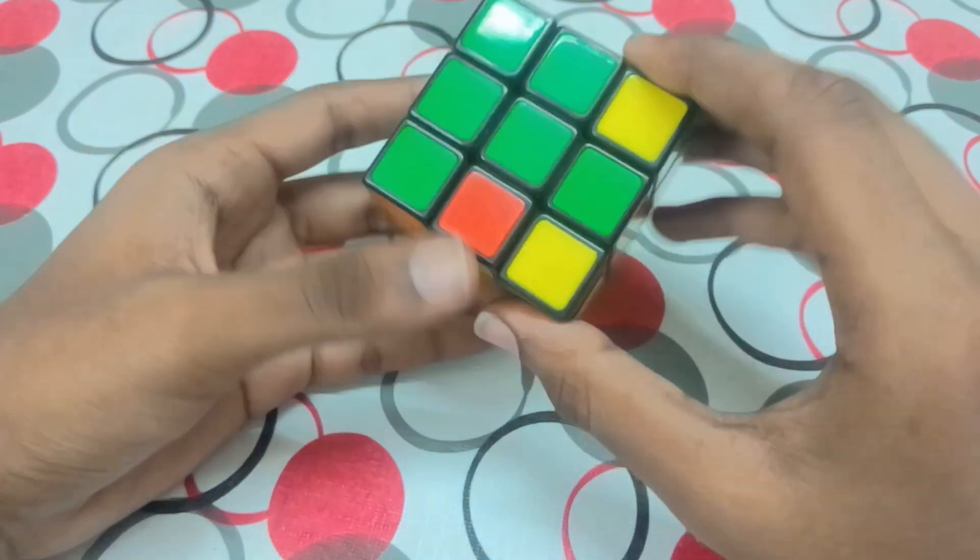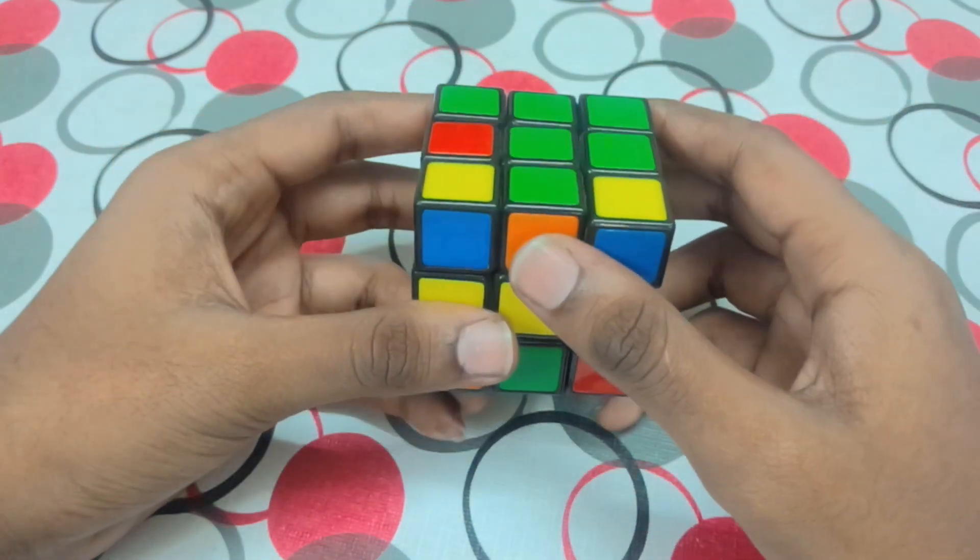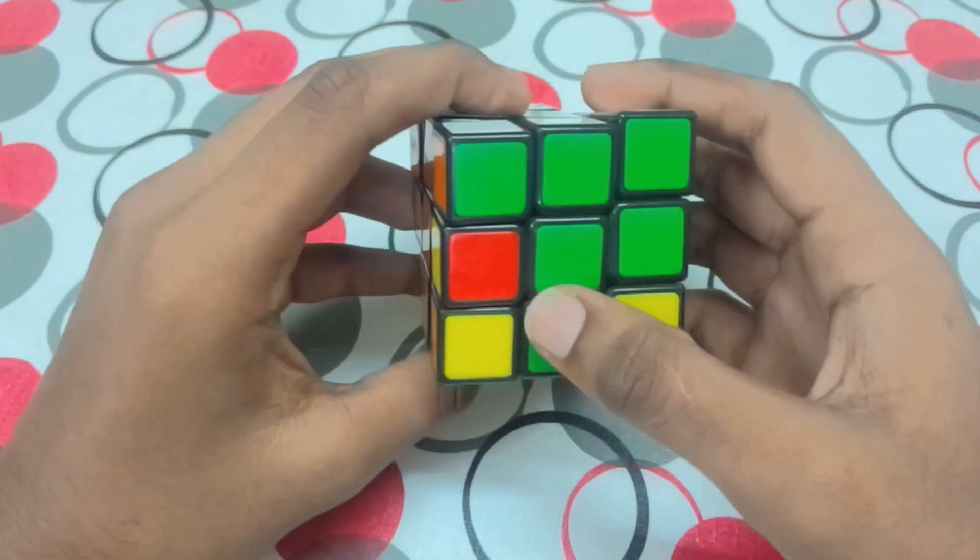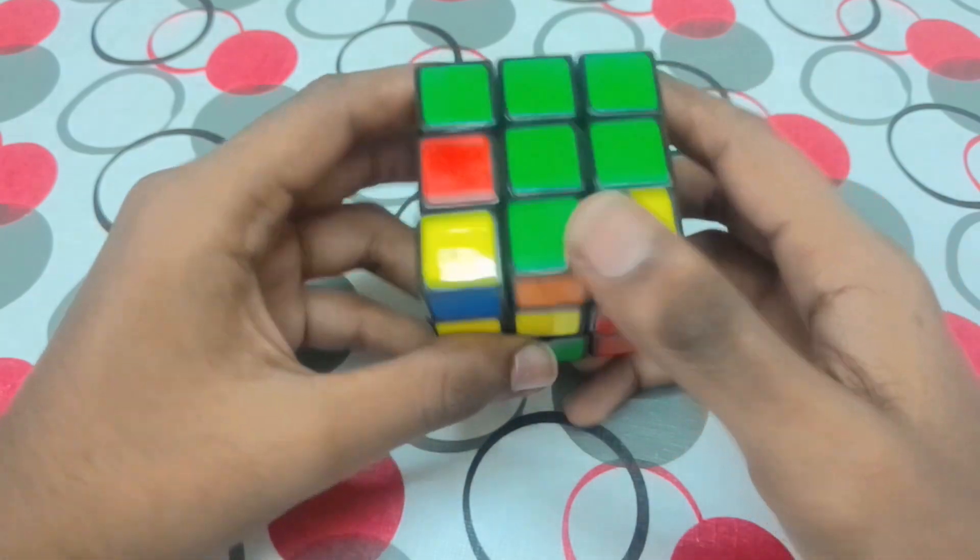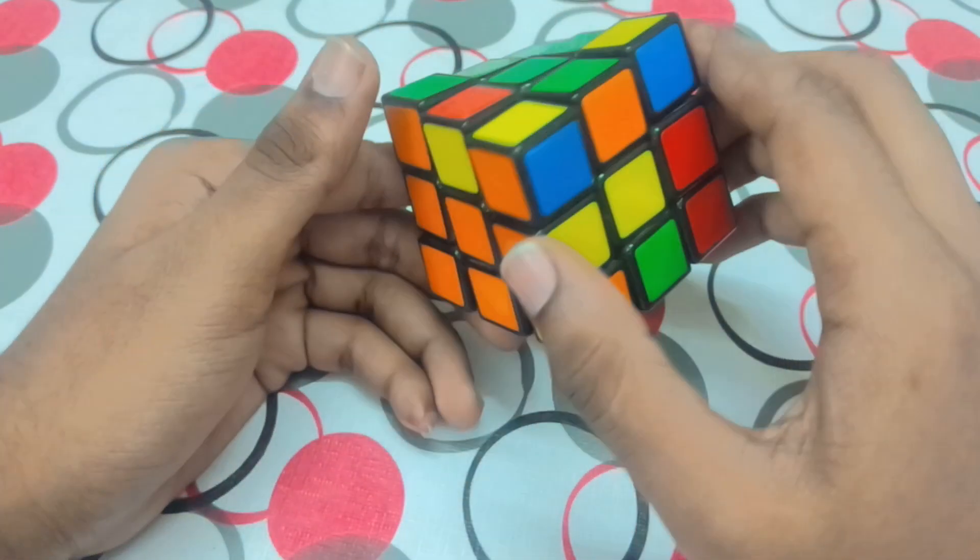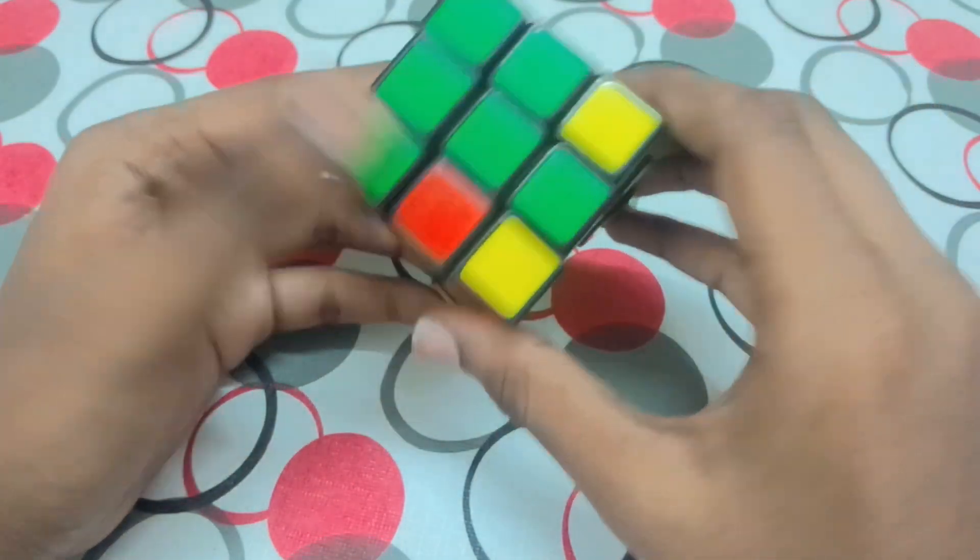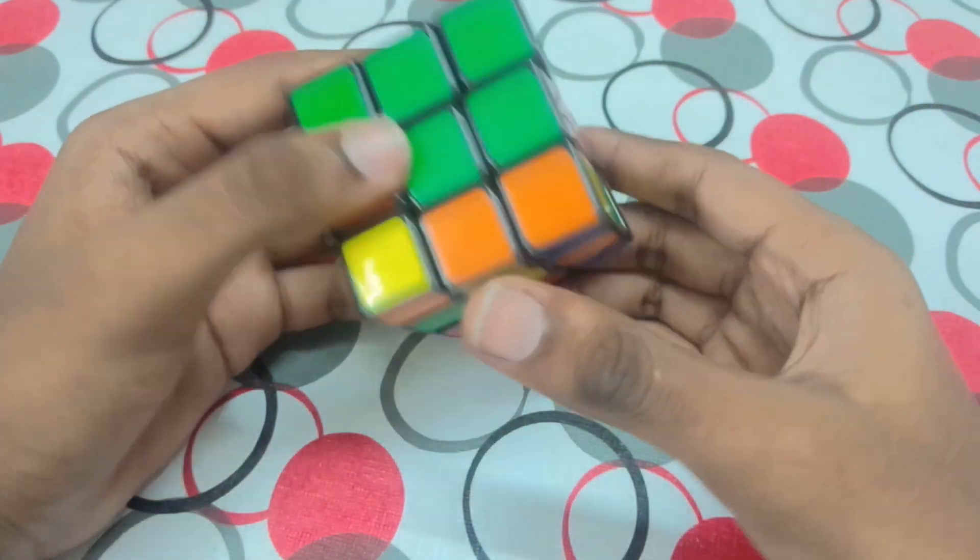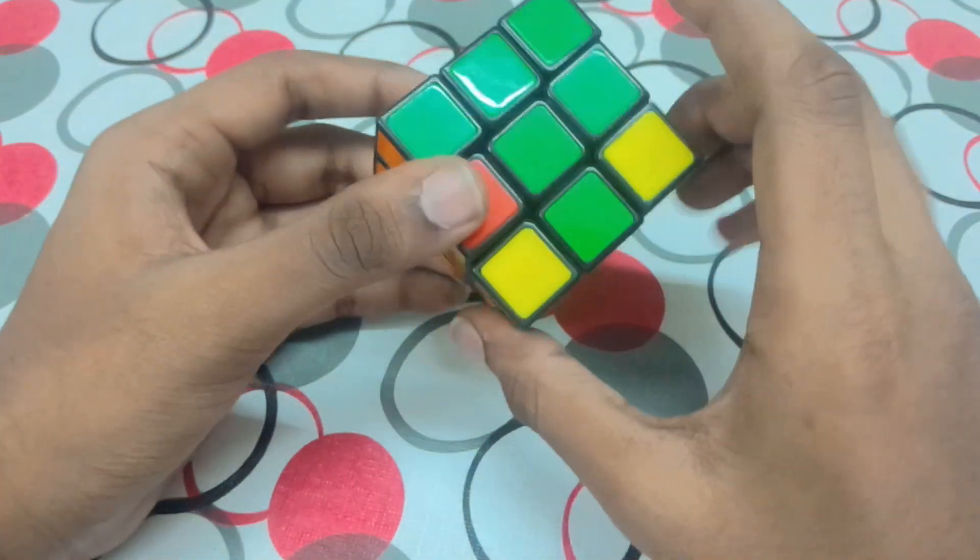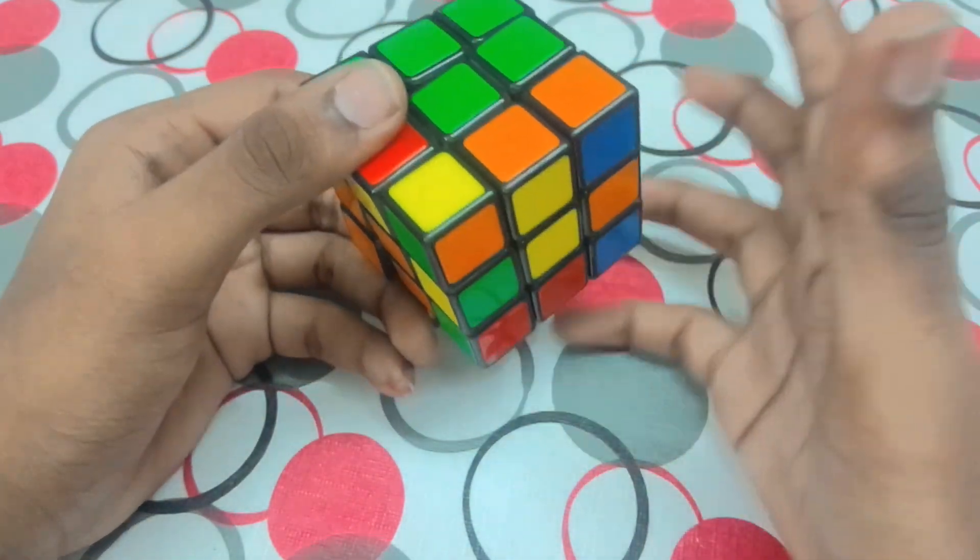Now take this orange bit to the green like this. Green, orange, orange. As like the first layer, turn it in the opposite direction as you have to fill it over here. You understood?